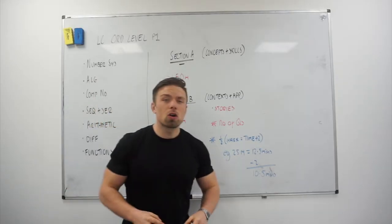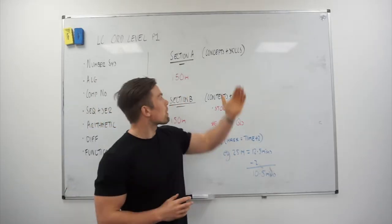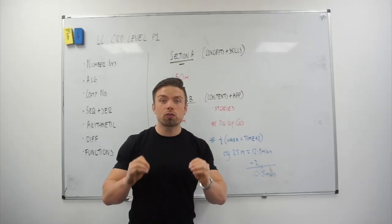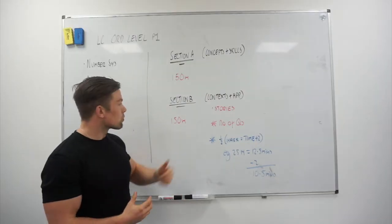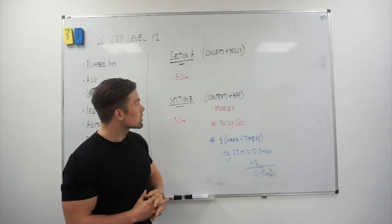Section A, sort of known as the short questions, or the official name, concepts and skills, worth 150 marks. And Section B, also known as the longer questions, worth 150 marks, official name, contexts and applications.